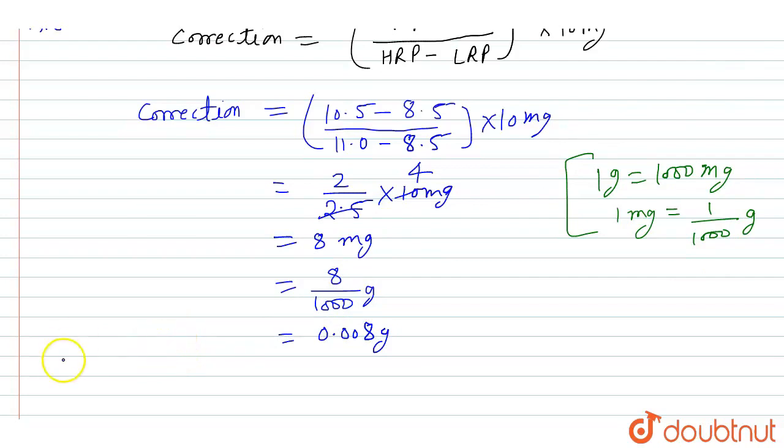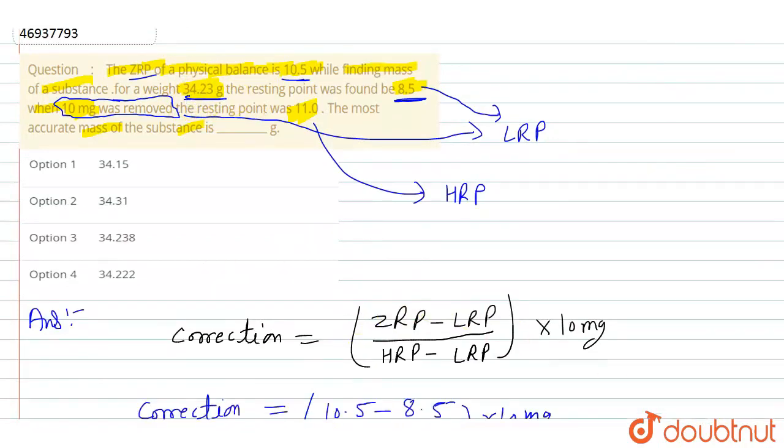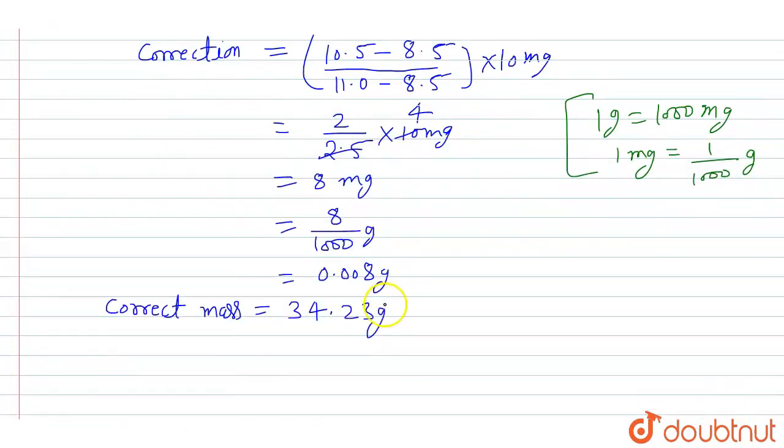The correct mass is original mass, 34.23 grams, minus the correction. When 10 grams is removed, we subtract the correction. Correct mass equals...